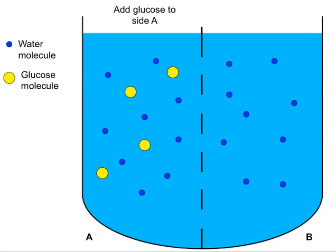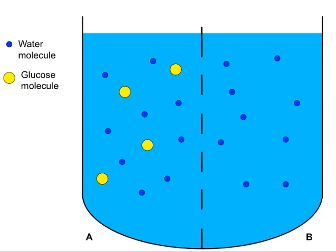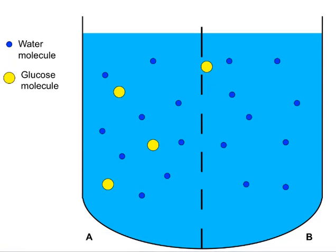Now let's add glucose to one side of the membrane — and this is a semipermeable membrane that allows glucose molecules to pass through. We now have a higher concentration of glucose on side A than on side B, where there is no glucose at all. This semipermeable membrane allows the passage of both water molecules and glucose molecules. So just as water molecules move, the glucose molecules will move too, and one glucose molecule may eventually cross the semipermeable membrane.